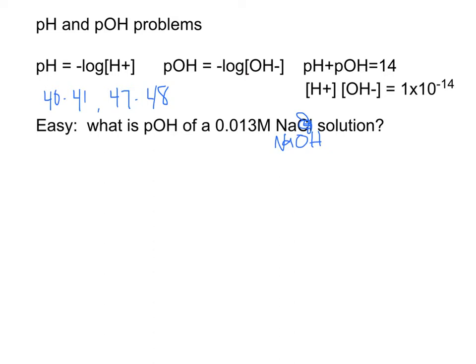To find pOH of the solution, it's a strong base, which means that 0.013 is the concentration of sodium hydroxide. The concentration of the solution is going to be equivalent to the moles per liter of sodium hydroxide. The pOH will be equal to the negative of the log to the base 10 of the concentration, 0.013. You just enter it into the calculator. Push the negative button, push the log button, then type in 0.013 and close the parentheses and hit enter.